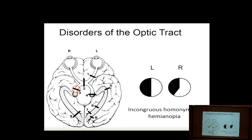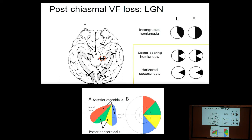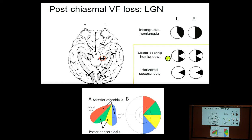The anterior choroidal artery supplies the optic tract and the lateral geniculate. If we have a stroke of the optic tract, it looks a certain way. The lateral geniculate is supplied by the anterior choroidal artery on the outer parts and the posterior choroidal artery in the middle. With the more common anterior choroidal artery stroke, we get a central beak-like zone of preserved vision. Remember: anterior choroidal stroke patients have hemiplegia and hemisensory loss — you might think it's an MCA stroke, but they have this distinctive visual loss pattern.